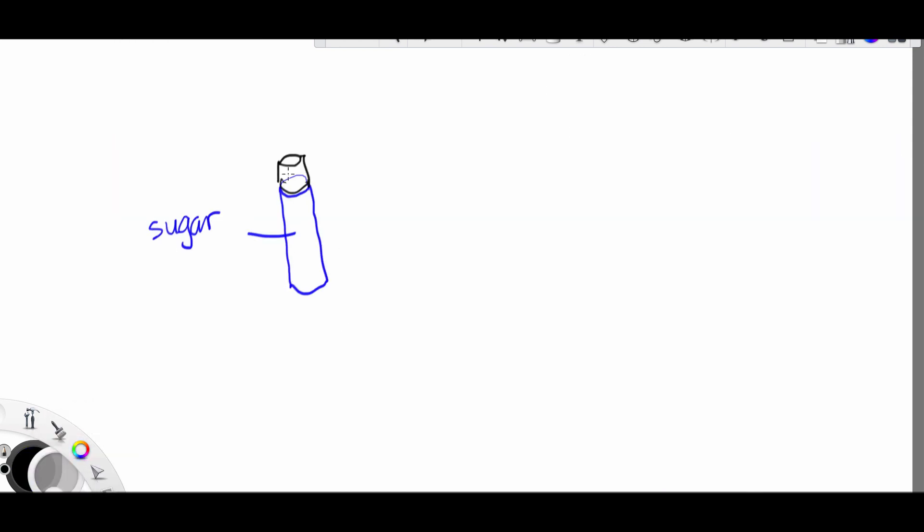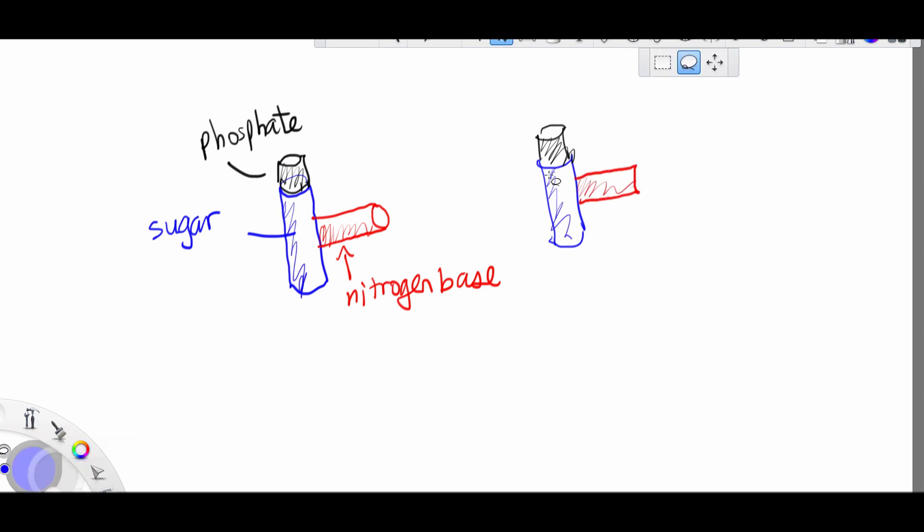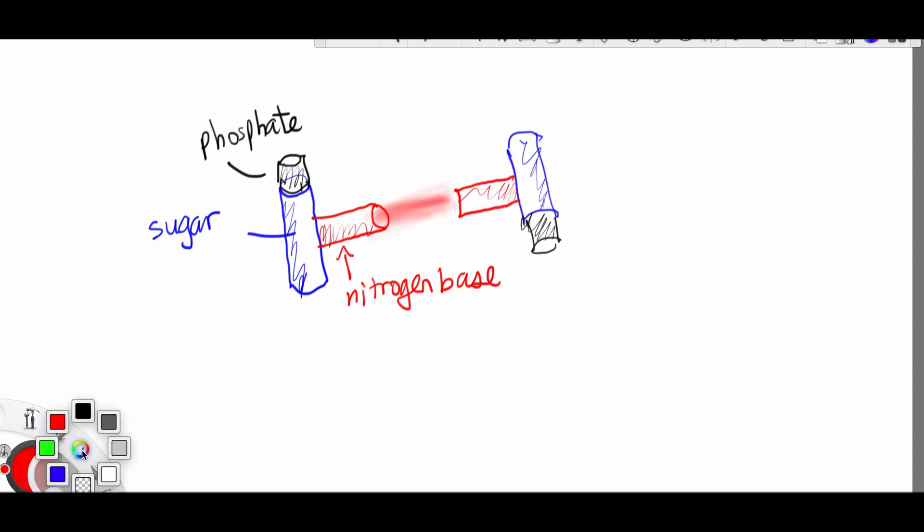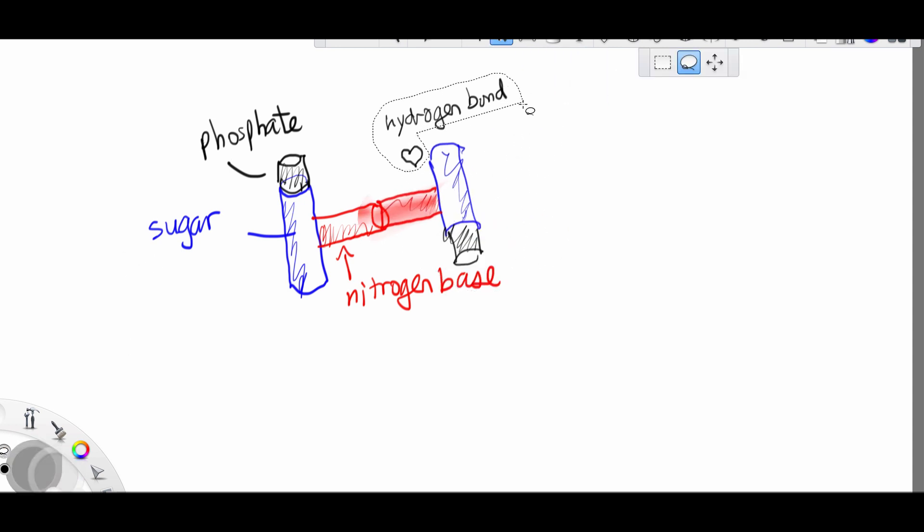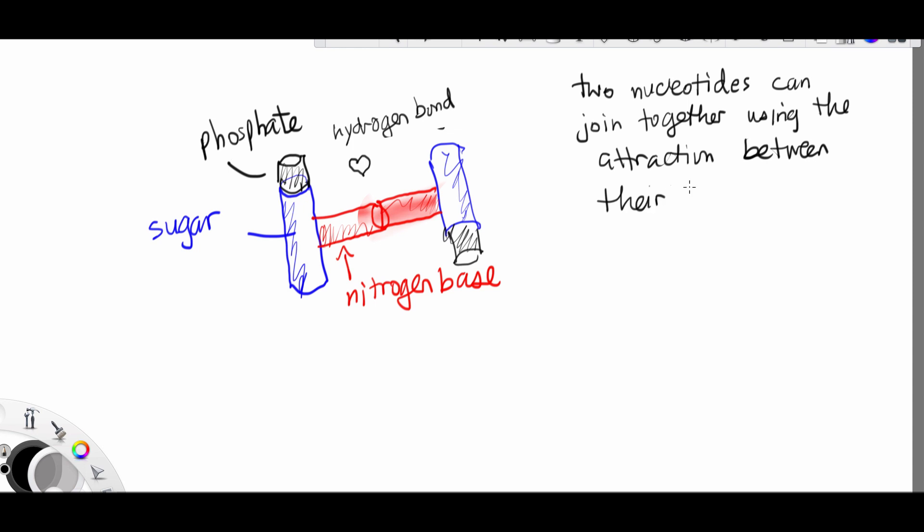We've got the sugar, the phosphate, and the nitrogen base, which makes one nucleotide. If we put two of them side by side, then we can attach them together like this. The nitrogen bases actually are attracted to each other using a chemical bond called a hydrogen bond. Two nucleotides can join together using the attraction between their nitrogen bases.